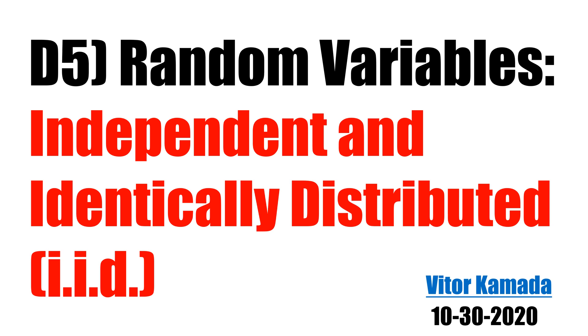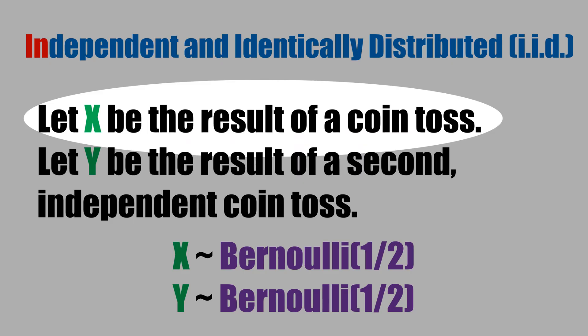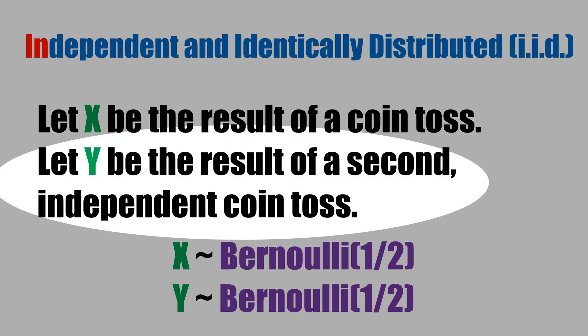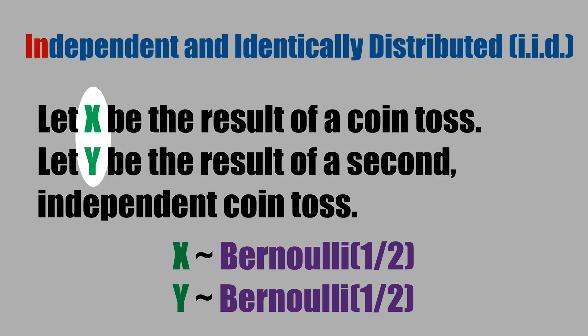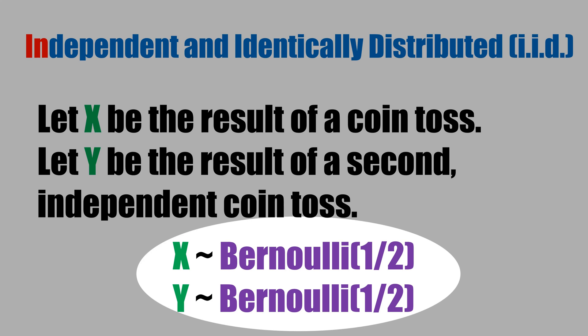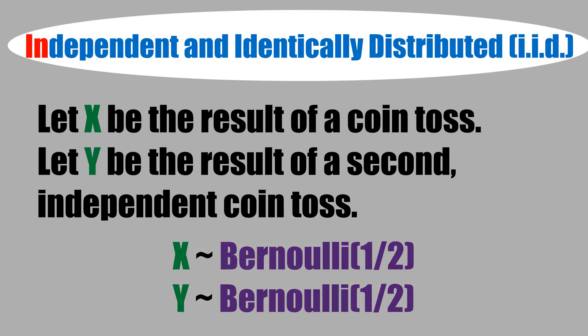Let's learn what is IID. Let x be the result of a coin toss and let y be the result of a second independent coin toss. Random variables are independent if they provide no information about each other. There is no reason to believe that x affects the result of y and vice versa. Both x and y have the same distribution — Bernoulli with probability of success one half. Therefore, they are independent and identically distributed.